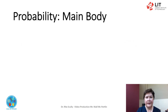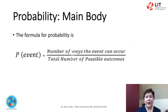The formula for probability is: the probability of an event equals the number of ways an event can occur over the number of possible outcomes.